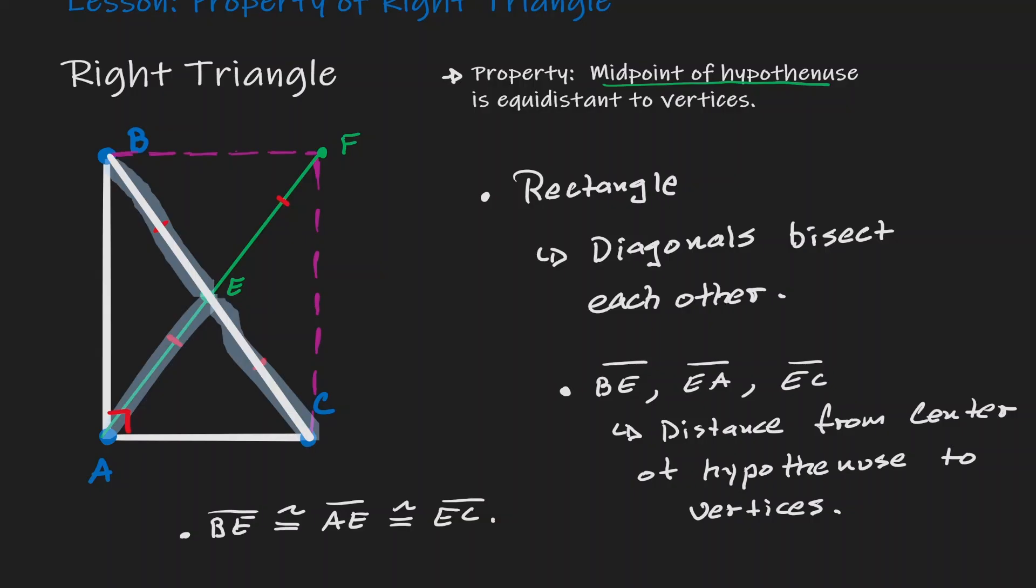We have shown that the midpoint of the hypotenuse, which in this case is point E, is equidistant to the vertices of my triangle, which in this case, the vertices were point B, A, and C.